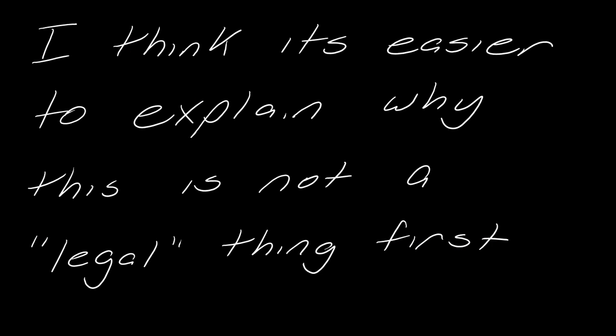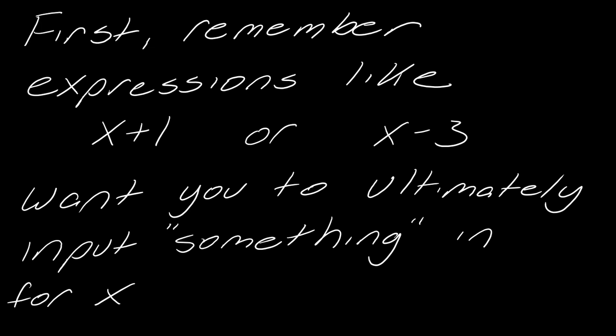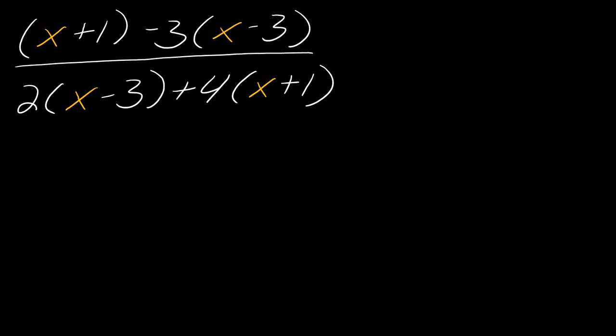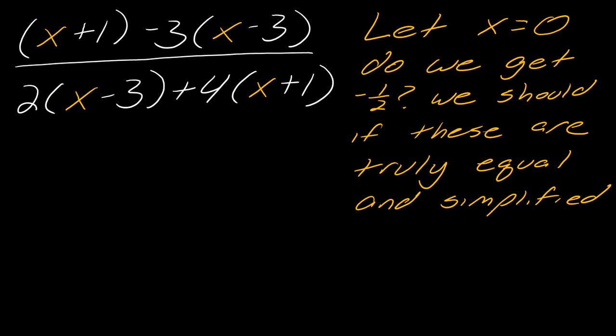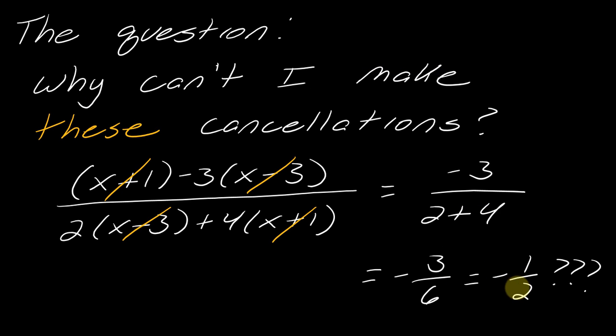So I think the easier way to explain why this is not legal, why you can't cancel like that, let me prove that to you first and show you a little hack for this if you're not sure. So first remember that expressions like x plus 1 or x minus 3, ultimately what that means is that you want to be able to input something in for x. And usually we input a number okay. So if I have this expression here let's just say for a second that I'm going to let x equals 0. So the question is if I plug in x equals 0 do we get that answer I found? Remember earlier the answer that I found was this, negative one half.